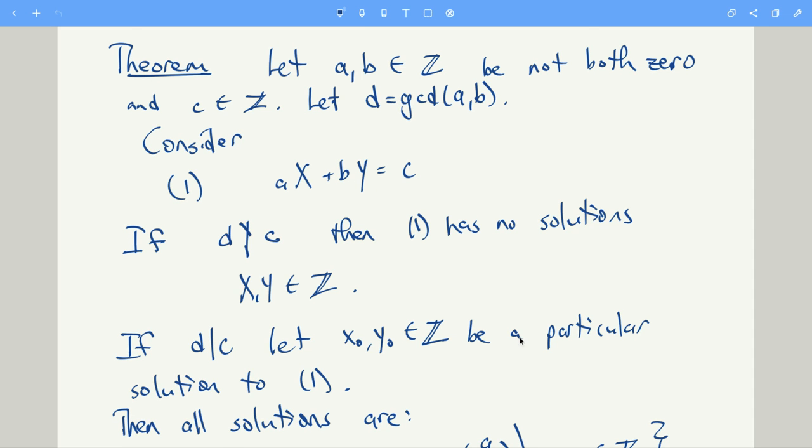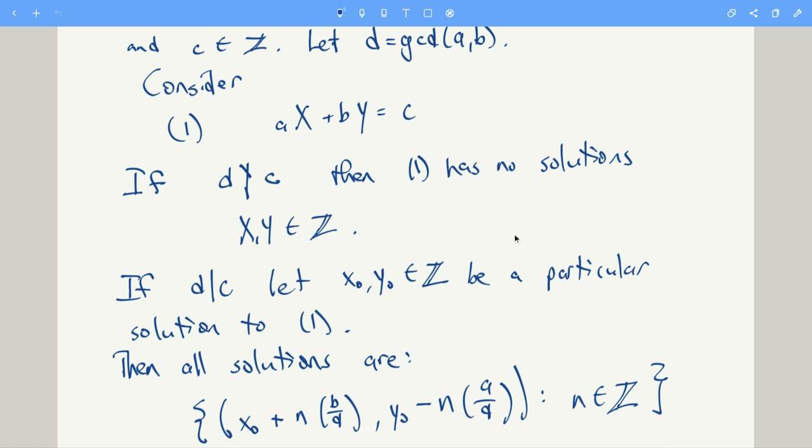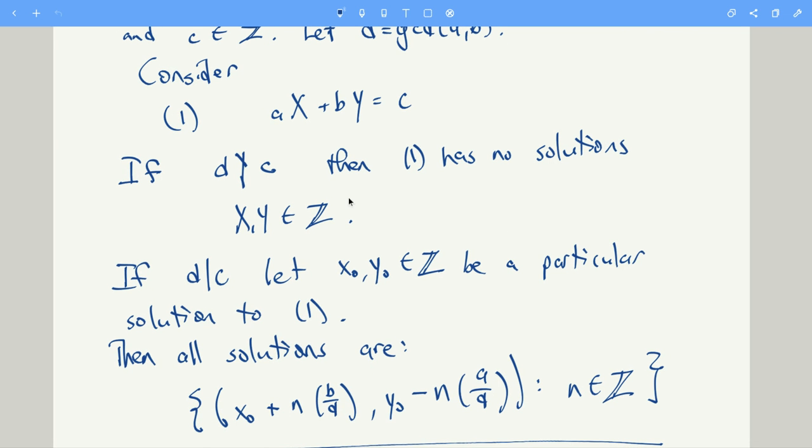On the other hand, if d does divide c, then we can find a solution. And we let a particular solution be like x naught, y naught. And then we can find all the solutions. All the solutions are given in this form. So each possible solution is of the form x naught plus n times b over d, and the value for y is y naught minus n times a over d, and n ranges over all the integers.